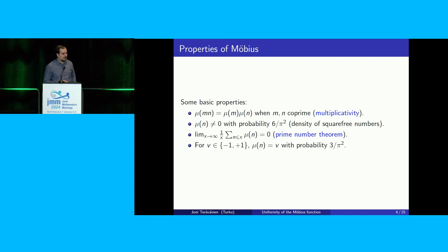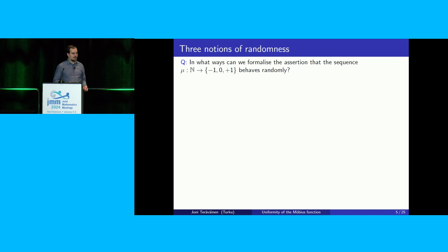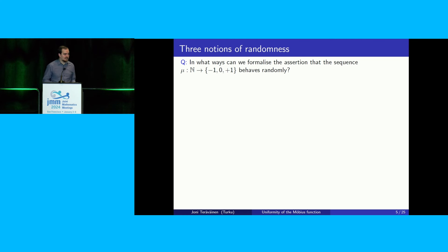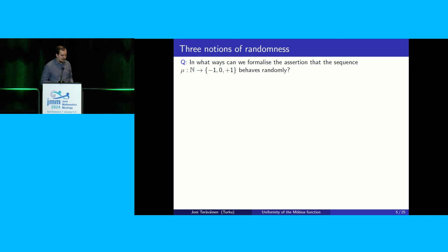Now we have this function that takes values plus 1 and minus 1, each with probability 3 over pi squared, and 0 otherwise. The question is: in what ways can we formalize the statement that this function should be random? There are in particular three notions of randomness I want to discuss in this talk, and as it turns out, they're all related for non-trivial reasons.